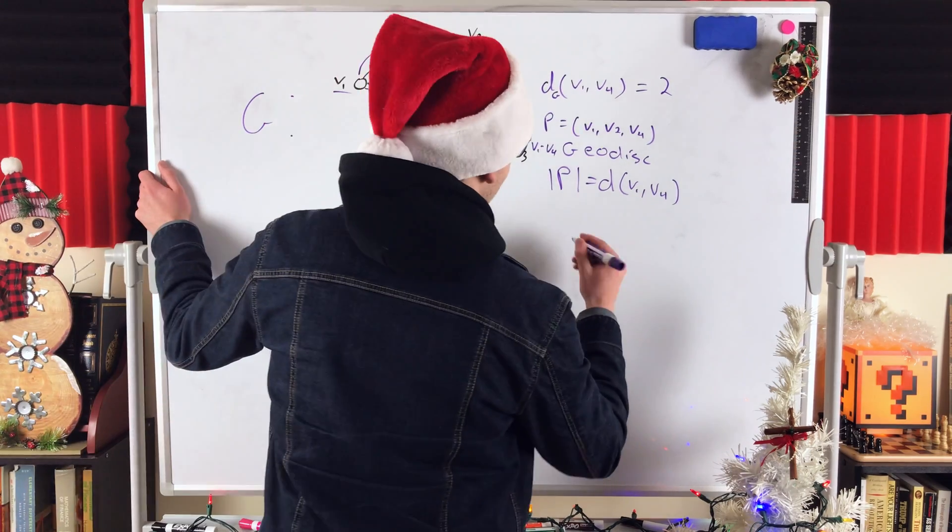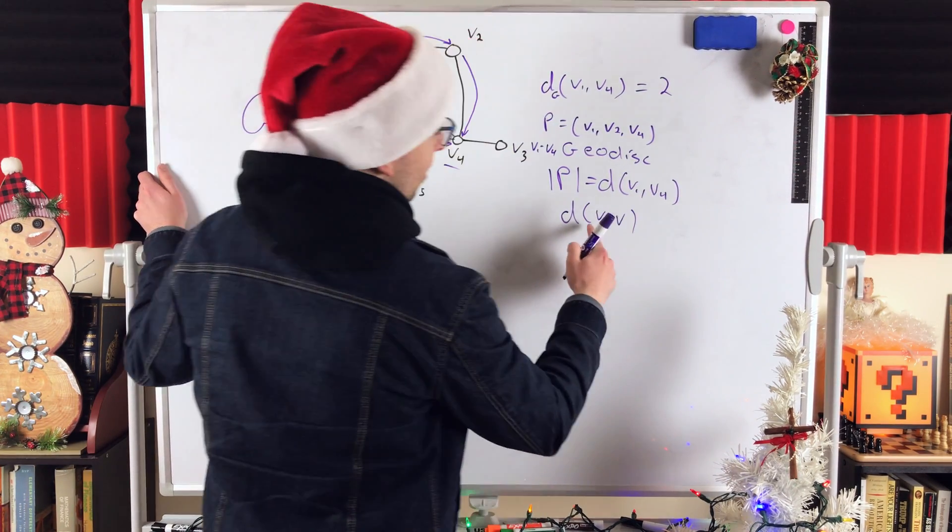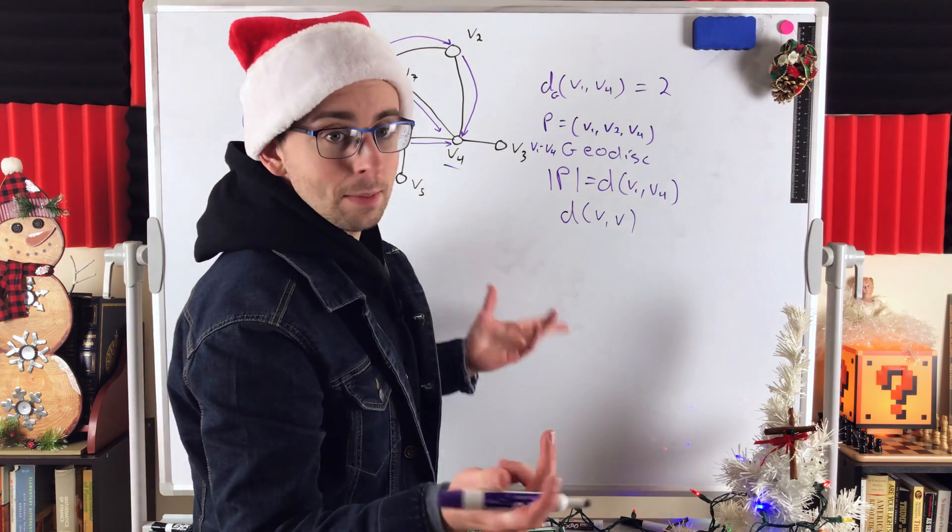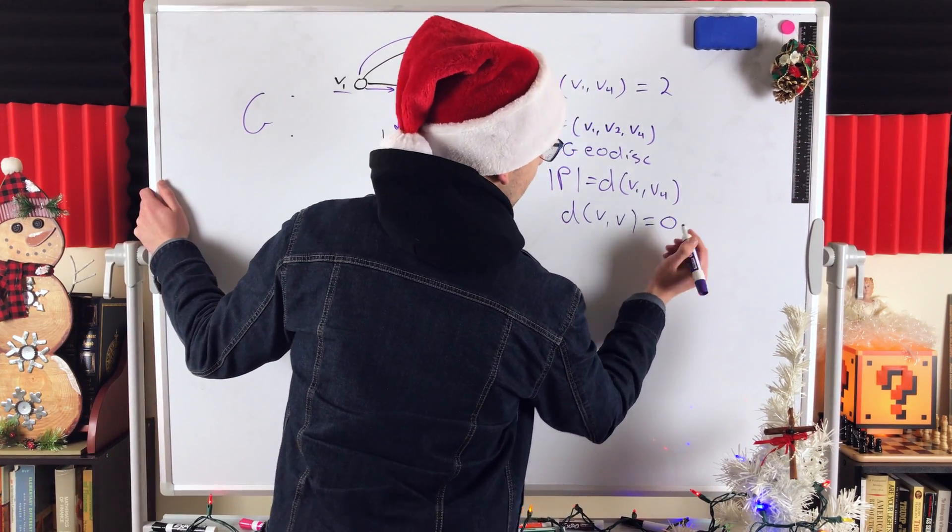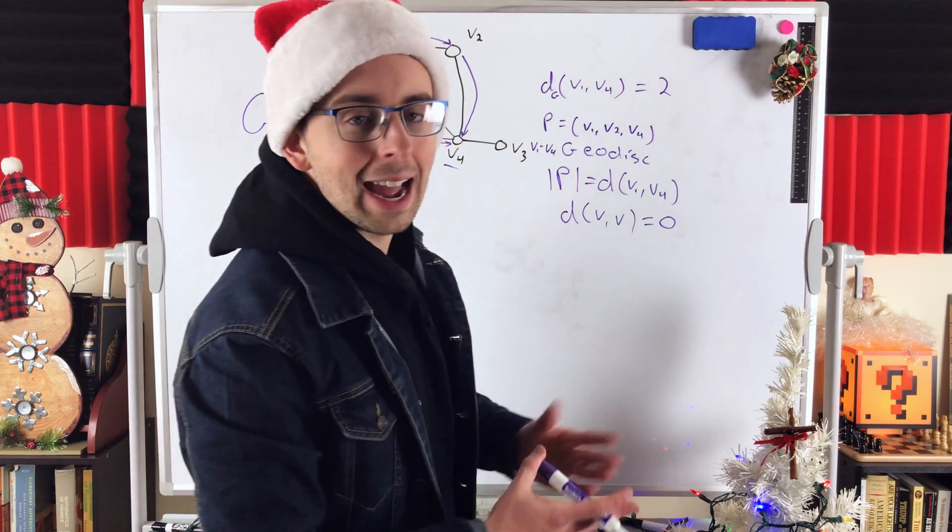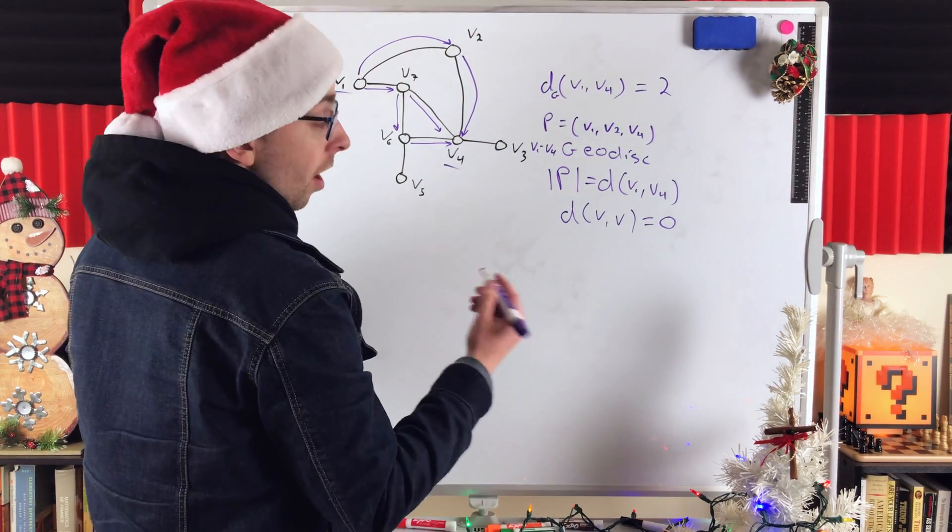I should mention this. The distance between a vertex to itself, we'll just say the distance from V to V, just keeping things general, not actually talking about vertices in this graph, is equal to zero. Because there is a trivial path of length zero going from V to V.